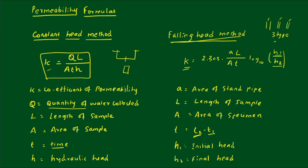H1 and H2 are the initial head and final head. This is the formula we use to find the coefficient of permeability using the constant head method and the falling head method. We will see more in the next video. Thank you.